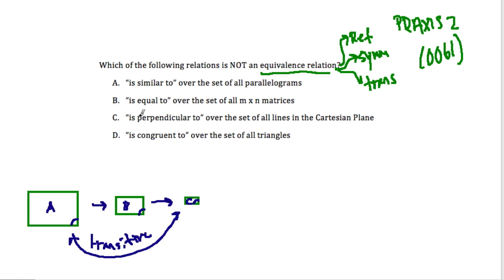So 'is similar to' is transitive and symmetric, because this goes both ways. If A is similar to B, then B is also similar to A. If B is similar to C, then C is also similar to B. And 'is similar to' is also reflexive — A is similar to itself. So choice A is an equivalence relation. We're trying to find one that's not an equivalence relation.